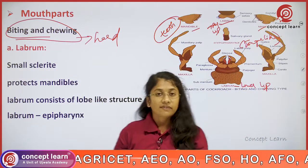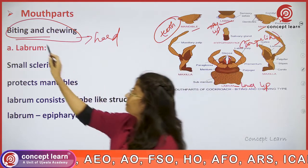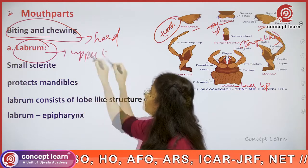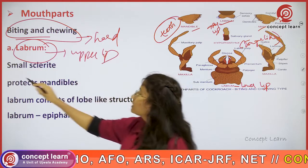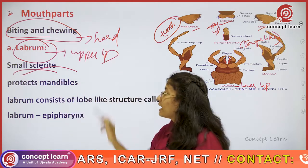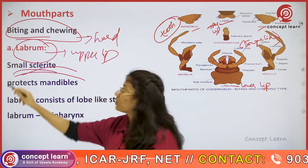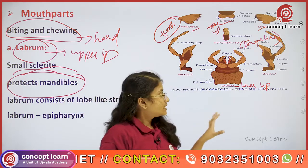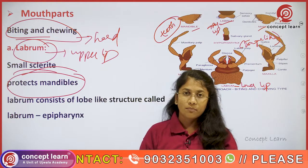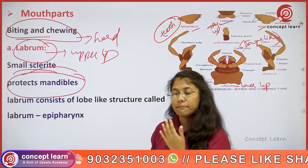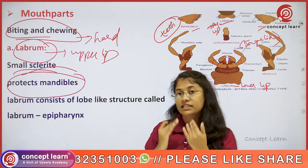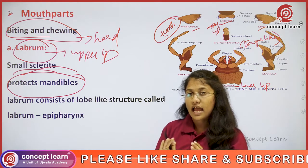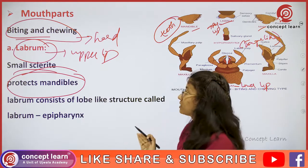The first mouth part is the labrum, which is known as the upper lip. It is the smallest sclerite and it usually protects the mandibles. Comparing with our mouth parts, we have a pair of lips that protect the teeth and tongue structures.